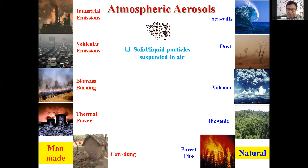Then there are sources which are man-made or anthropogenic. Industrial emissions — industries put too much particles into the atmosphere. Vehicular emissions — in all big cities you can see traffic putting too much pollution. Biomass burning — around Diwali time we hear of too much crop residue burning going on in Punjab and Haryana, polluting the whole of north India. Thermal power plants, which are almost everywhere in India and use coal to generate electricity. And then cow dung cakes, which many poor people use as a source of fuel for cooking. So these are all the sources of aerosols in the atmosphere.